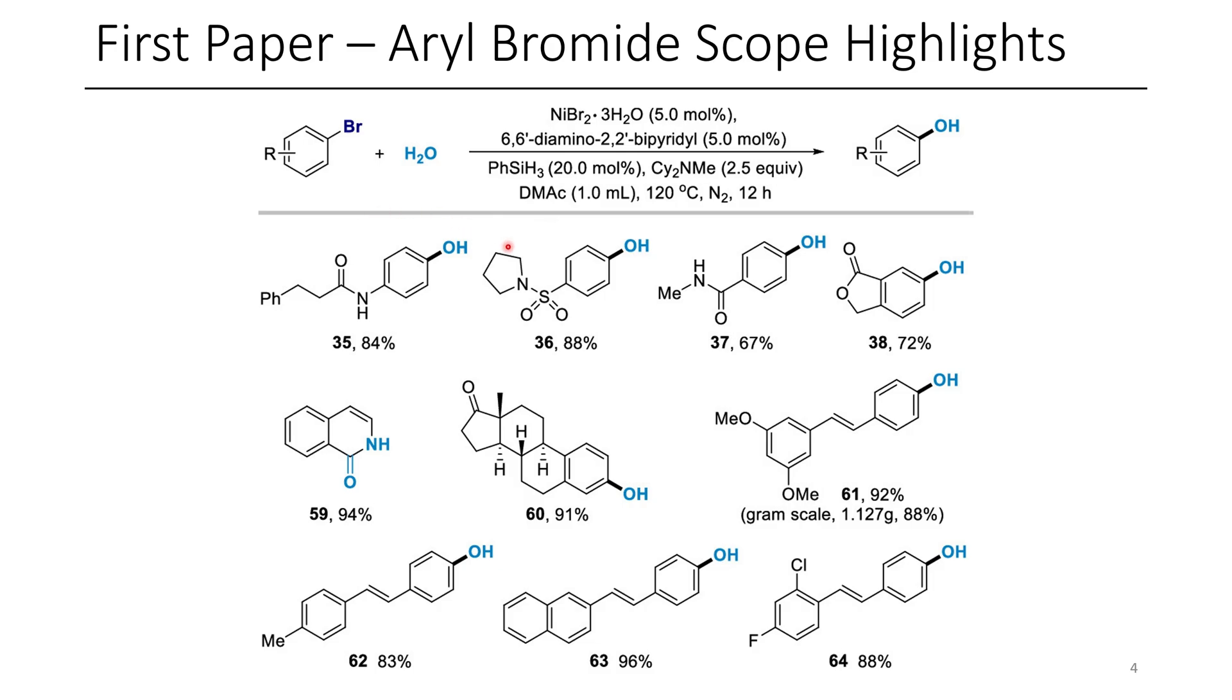Here are some examples from the manuscript, although there are many other examples in the full paper that you might want to check out. Functional groups, as well as complex scaffolds, were well tolerated, and this is something that I was really happy to see in this paper.